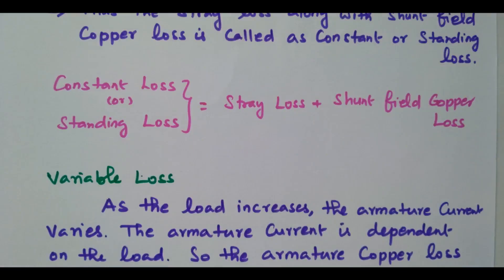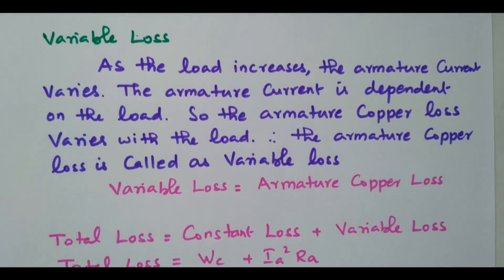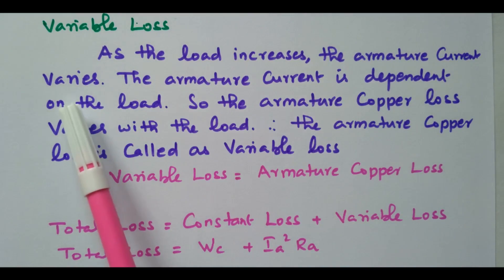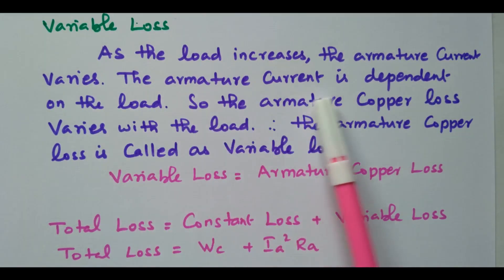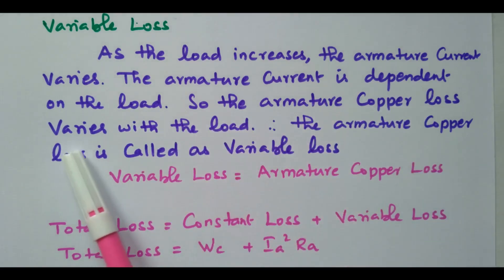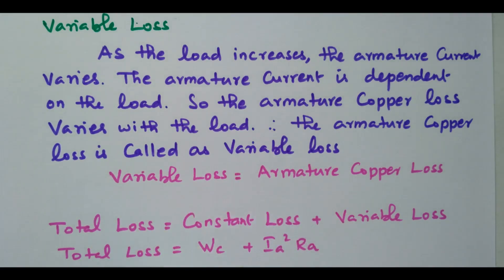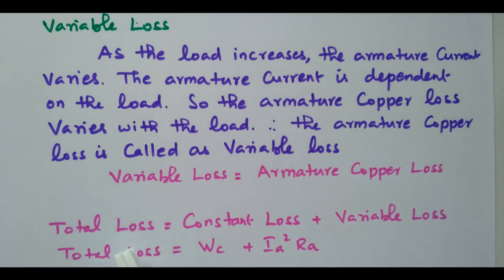As the load increases, the armature current also increases. The armature current depends on the load, so the armature copper loss varies with the load — therefore, armature copper loss is called a variable loss. Either the armature winding or series field winding loss increases when the load increases. The total loss is constant loss plus variable loss: Wc plus Ia squared into Ra.